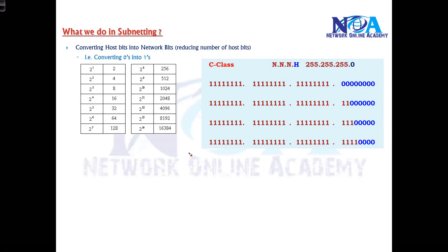So in subnetting, if you want to reduce the size of the network, simply reduce the number of host bits. Because the number of host bits will decide the size of the network. If you want smaller sizes, you are going to reduce the number of bits. That's it.